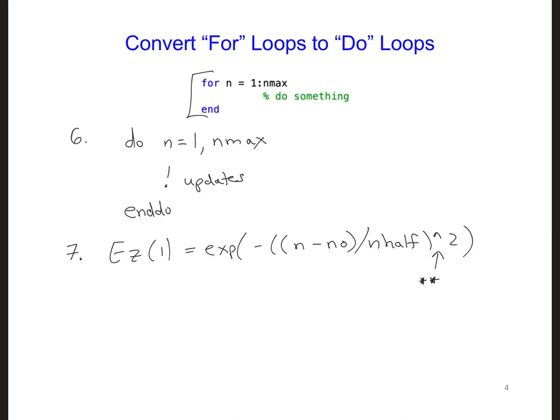Also, since Fortran is picky about real numbers, we need to convert the integer n time-stepping numbers to real numbers. So here, I would write, instead of just n minus n naught, we want to convert this to a real number. So put real n minus n naught. And then here also, instead of just divide by n half, divide it by, all this together, real n half. Otherwise, you're going to get rounding.